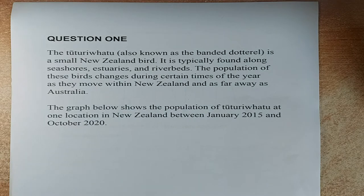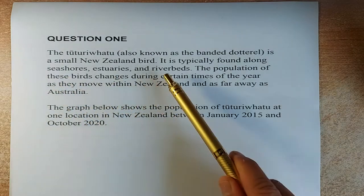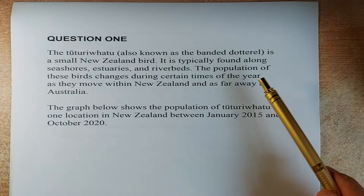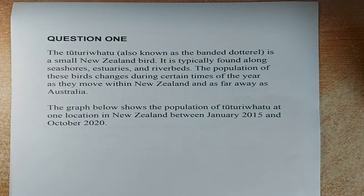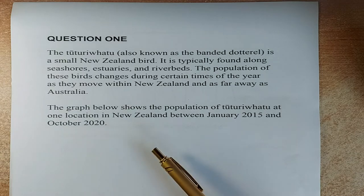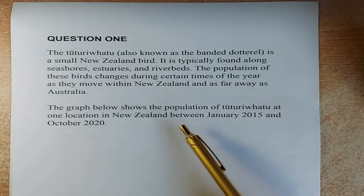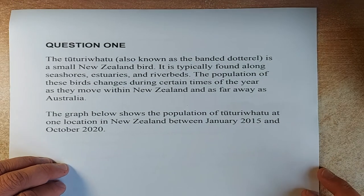The first question is about the Tuturiwhatu, a bird found along the seashores, estuaries and riverbeds. The population of the birds changes during certain times of the year as they move within New Zealand and as far away as Australia. The graph below shows the population of Tuturiwhatu at one location in New Zealand between 2015 and 2020.